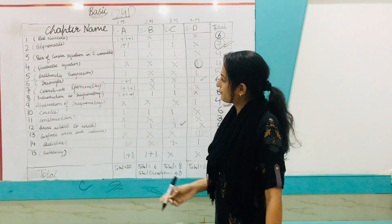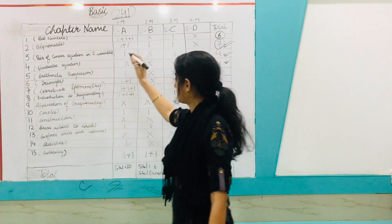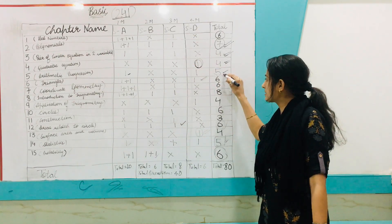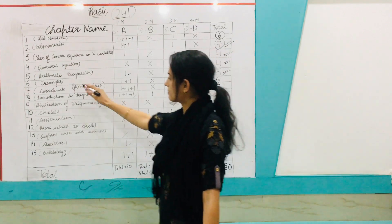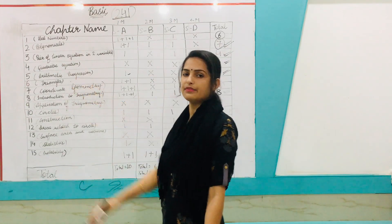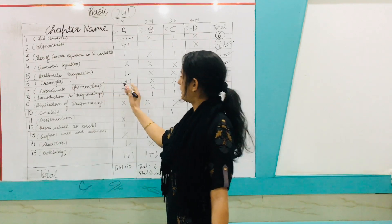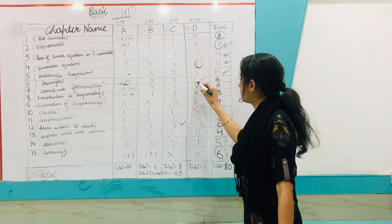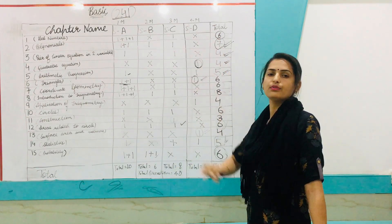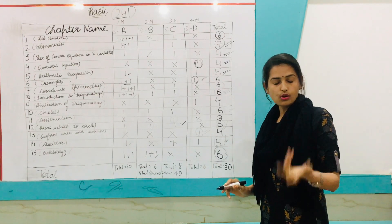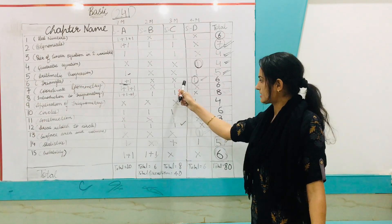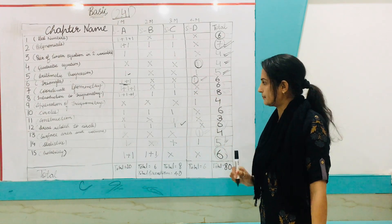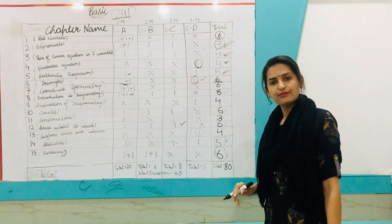Chapter 5, Arithmetic Progression — one question of one mark and one question of four marks, totaling five marks. Chapter 6, Triangles — though it is difficult for students, there will be two questions of one mark each and one question of four marks, totaling six marks. You don't need to spend too much time here; focus on the last two exercises and key theorems of this chapter.